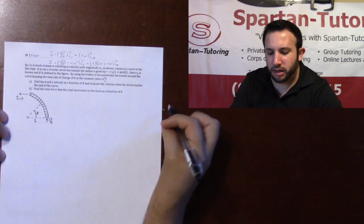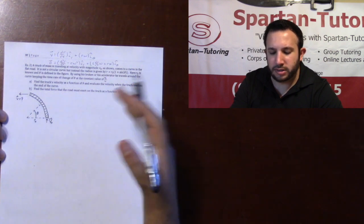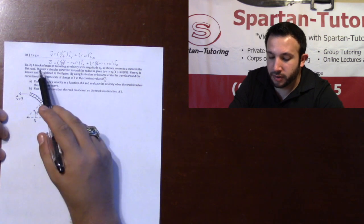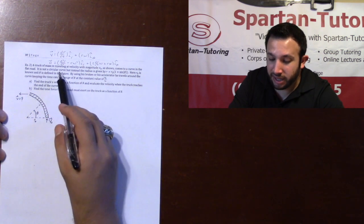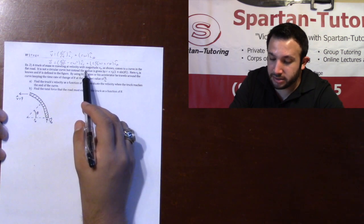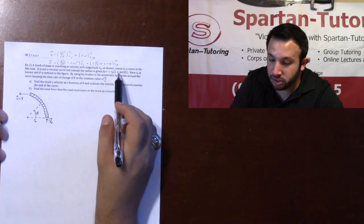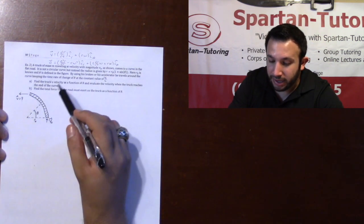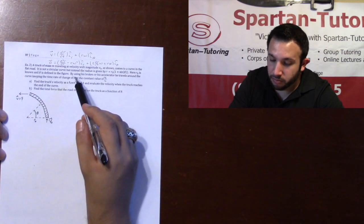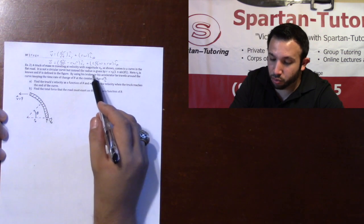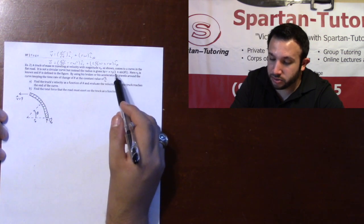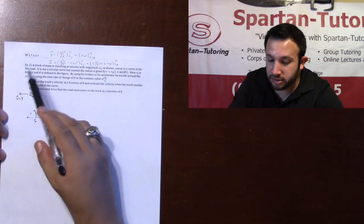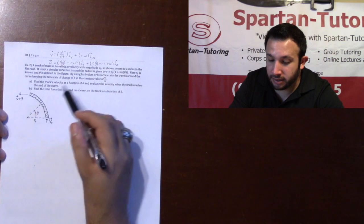Let's take a look at another one of these track-and-shoot type problems. For number two, it says that a truck of mass m traveling at a velocity of magnitude v-naught, as shown, comes to a curve in a flat road. It is not a circular curve, but instead the radius is given by r equals r-naught times 1 plus sine theta, where r-naught is known and theta is defined in the figure.